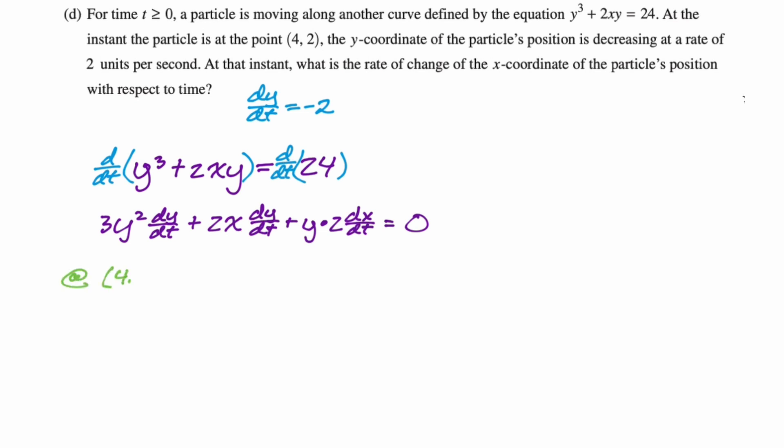So I'm going to say at the point (4, 2), so x is 4, y is 2, we know that dy/dt is negative 2. So we're plugging in. So we're going to have 3, 2 squared, and then dy/dt is negative 2. 2 times 4, dy/dt is negative 2. And then we have 2 for y. We have 2 that's there. dx/dt is what we want to solve for, equals 0. We can kind of clean this up, get negative 24 minus 16 plus 4 dx/dt is equal to 0.